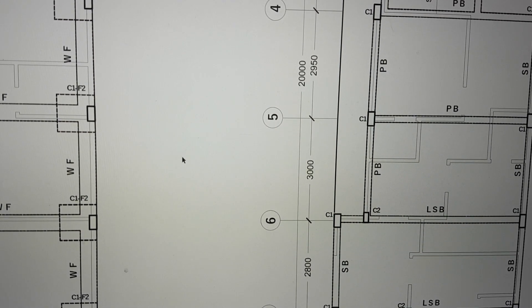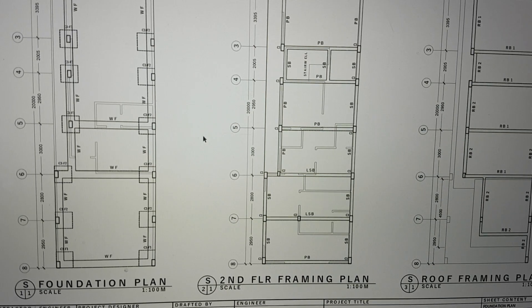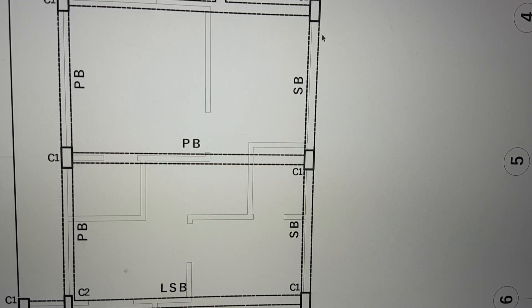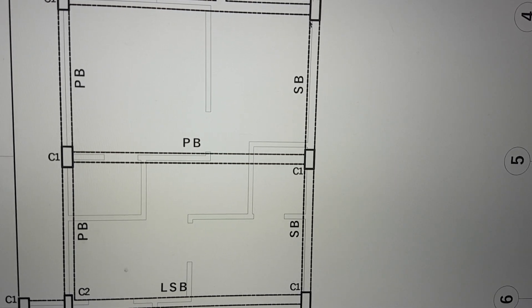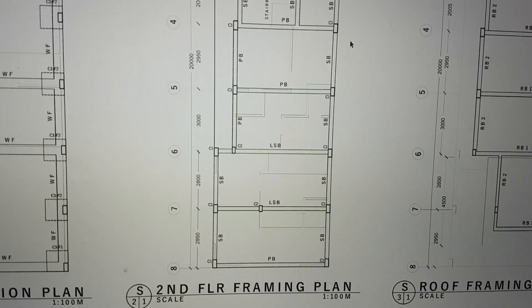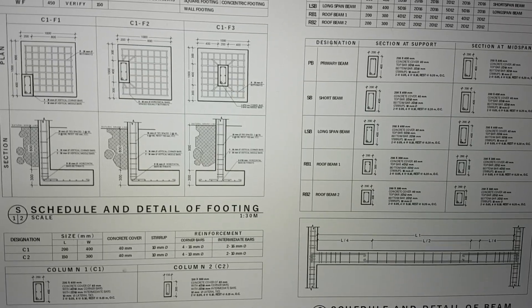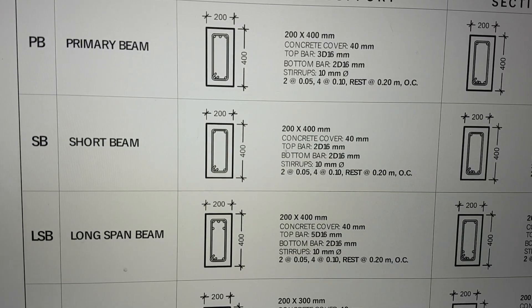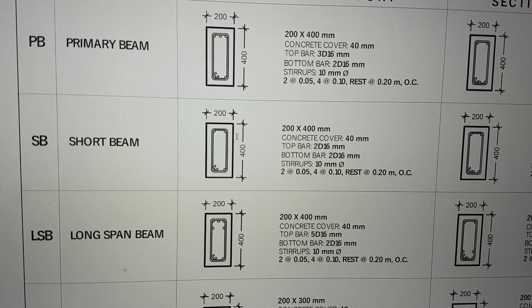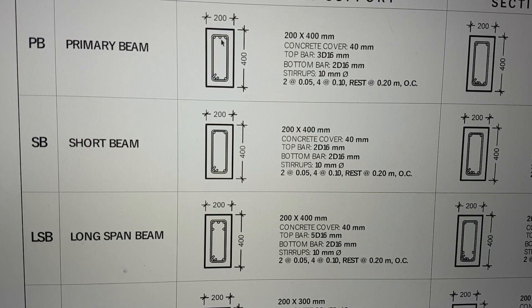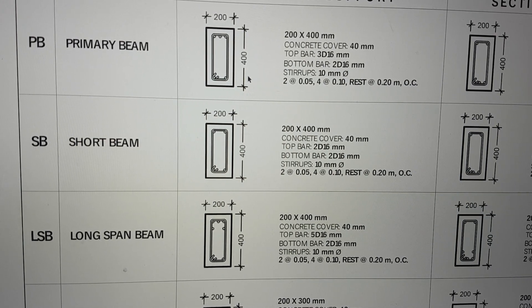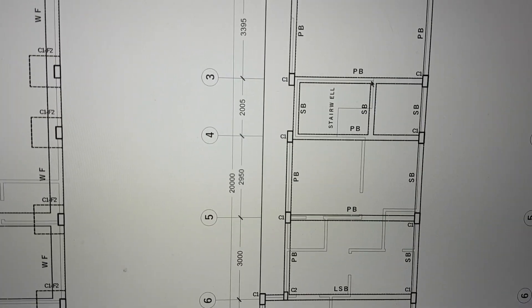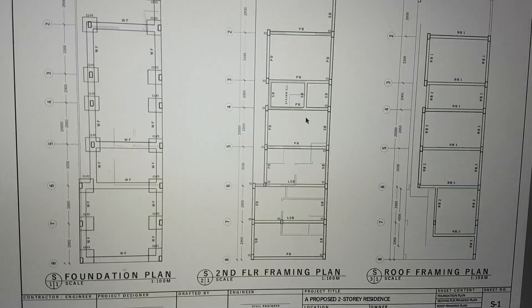Before we proceed with the estimating, let's first check what is the dimension of SB, because for this beam it is SB. Going to the schedule for the beam, SB is 0.2 meters for the width and 0.4 meters for the depth. Likewise with PB, it is 0.2 by 0.4 for the cross-sectional dimension. So PB and SB have the same dimensions.